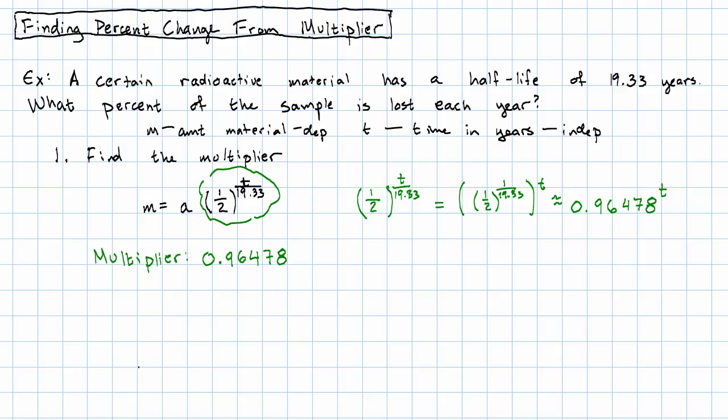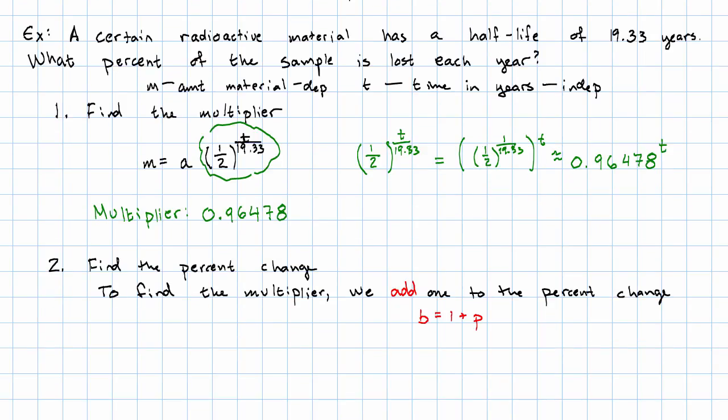Okay, now what? Well, now we need to find the percent change. How? Well, remember, when we wanted to find the multiplier given the percent change, we added one to the percent change. We said the multiplier equals one plus the percent change.